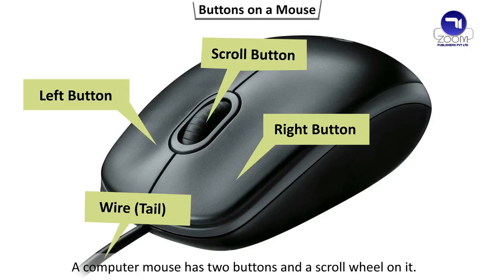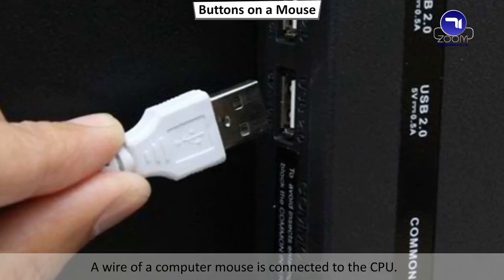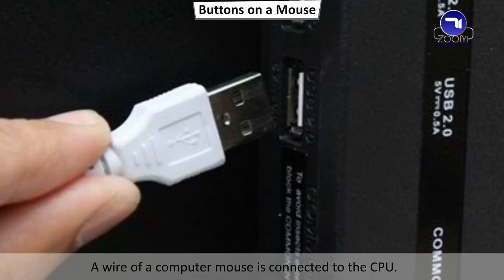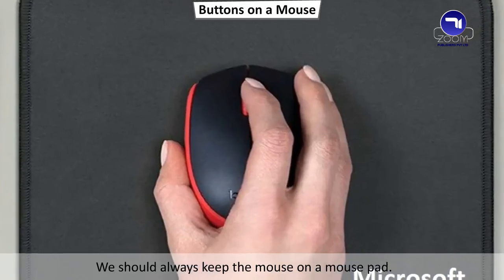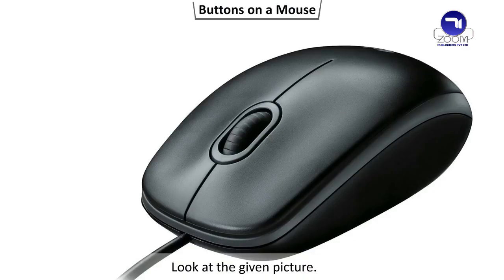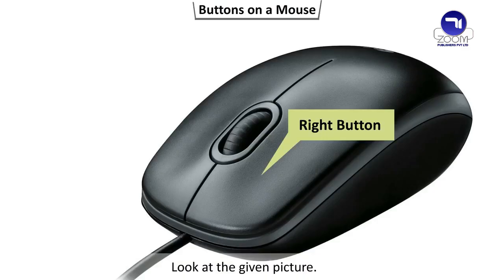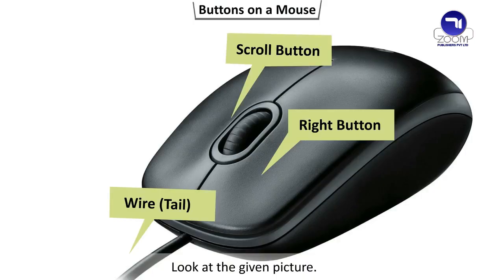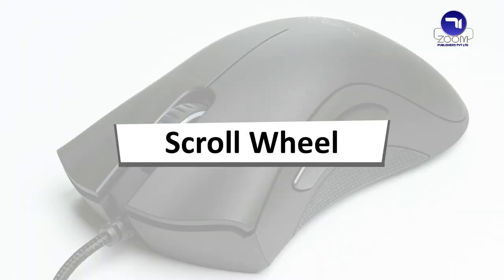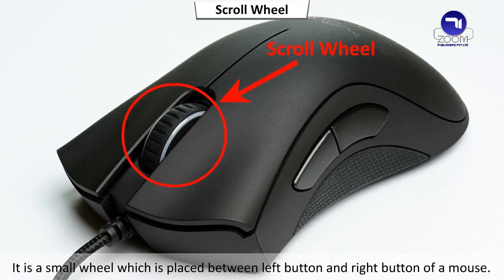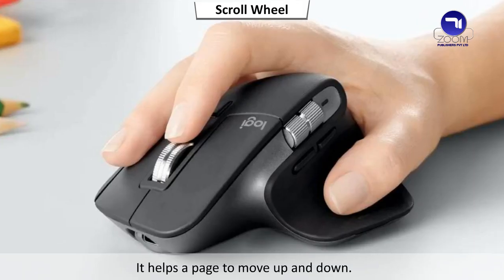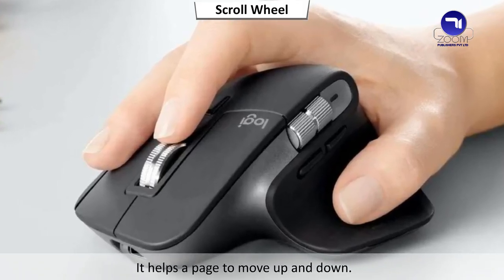A computer mouse has two buttons and a scroll wheel on it. A wire of a computer mouse is connected to the CPU. We should always keep the mouse on a mouse pad. The scroll wheel is a small wheel placed between the left button and right button of a mouse. It helps a page to move up and down.